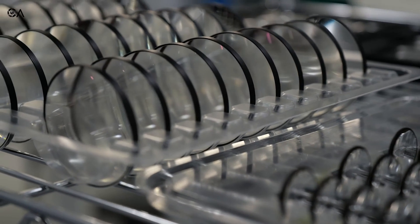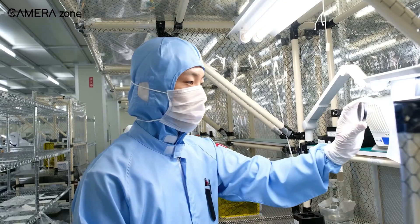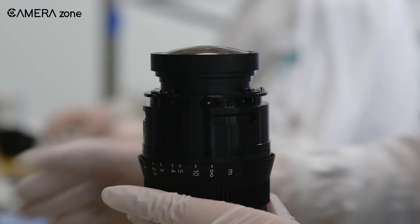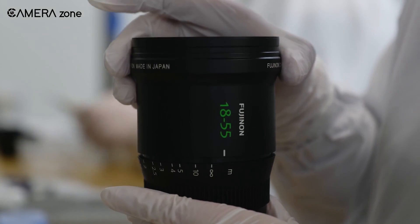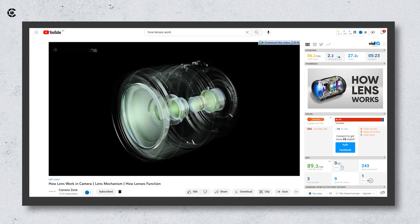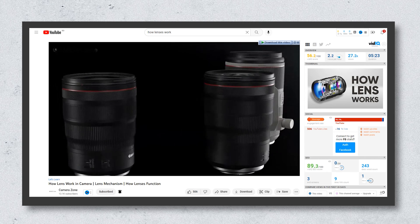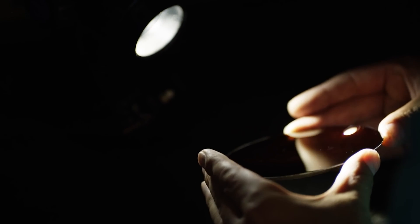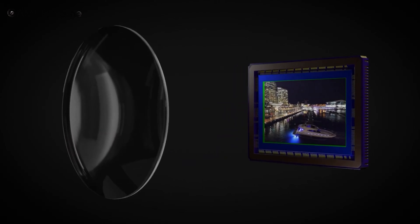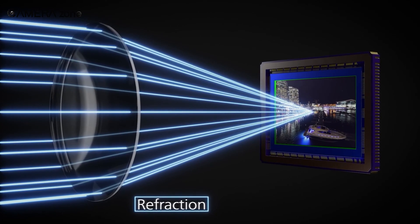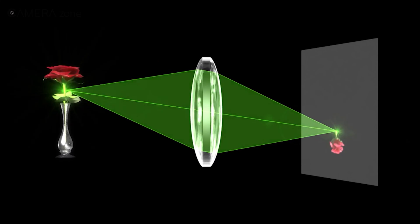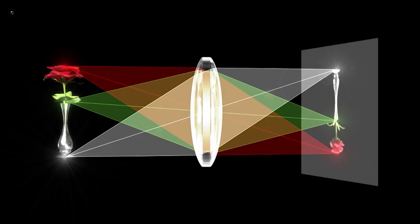A lens is more than just a glass piece — a lot more process goes into making it. A lens is a piece of transparent glass that concentrates or disperses light rays when passing through them by refraction. The lens allows you to control the amount of light that enters the camera. Images formed by a lens are determined by its shape.